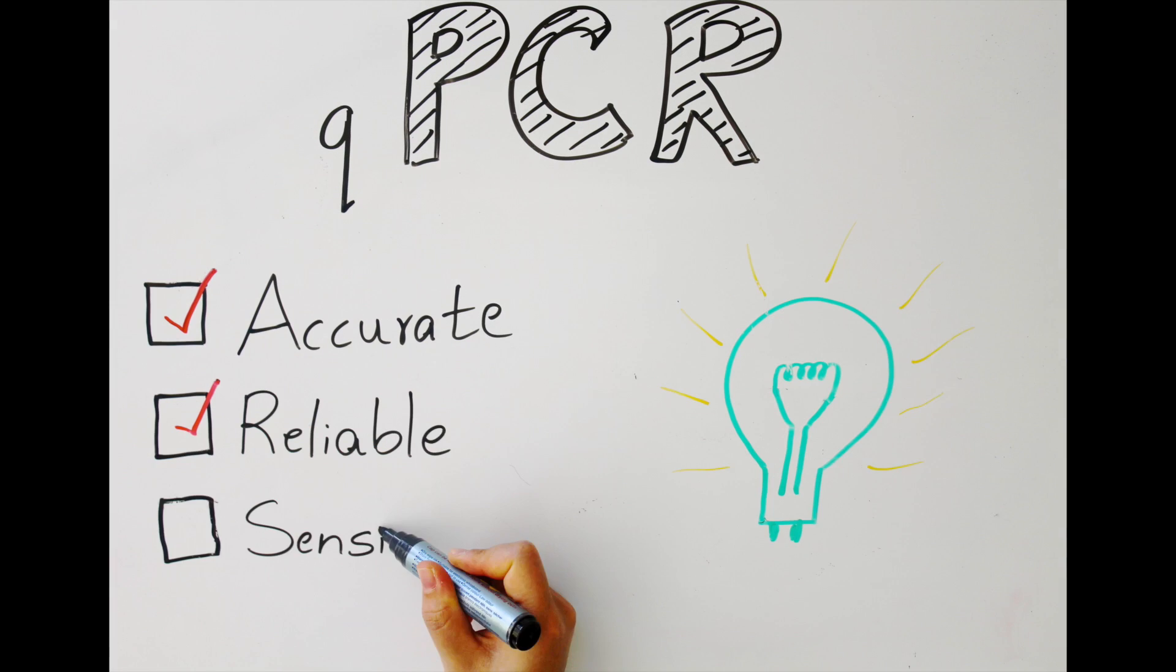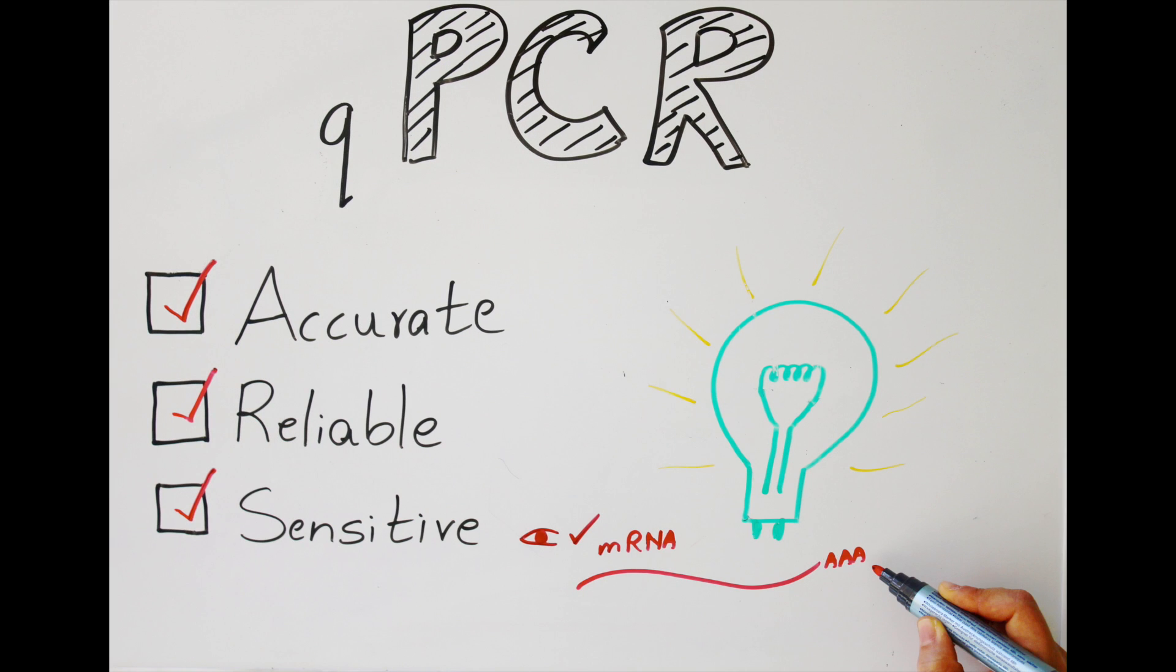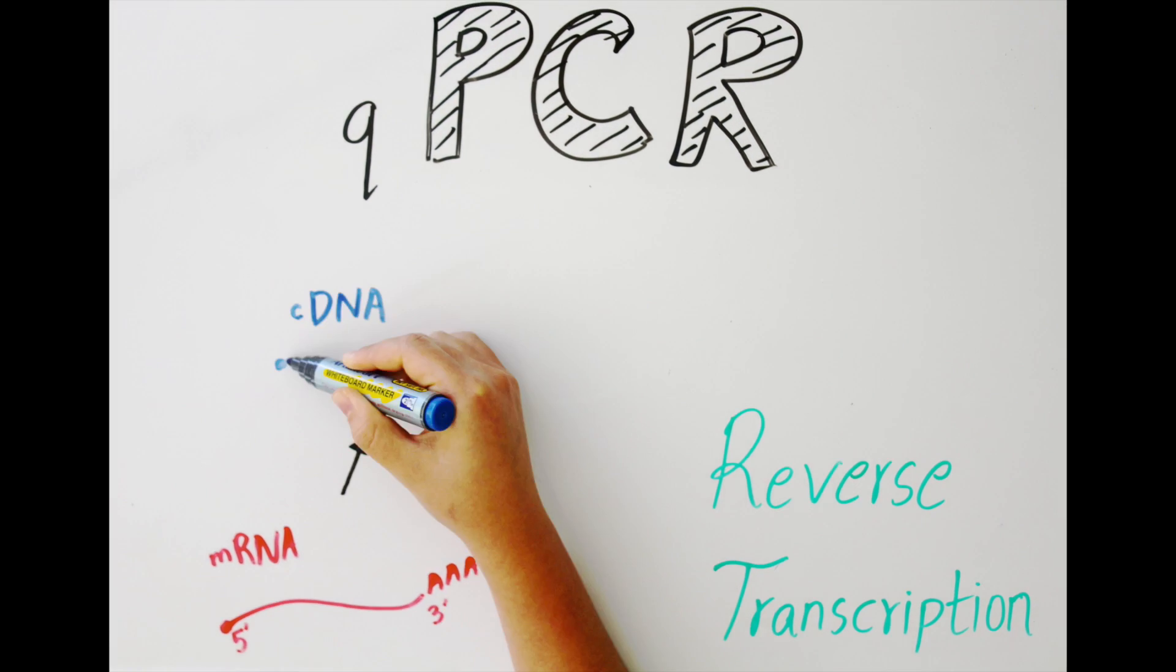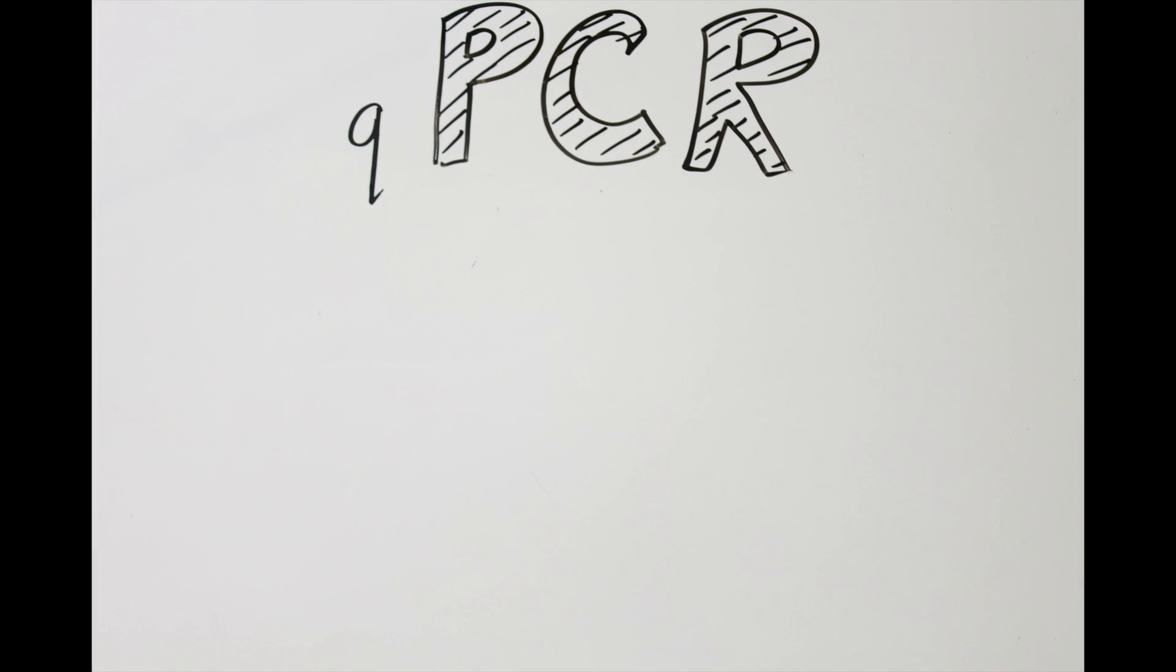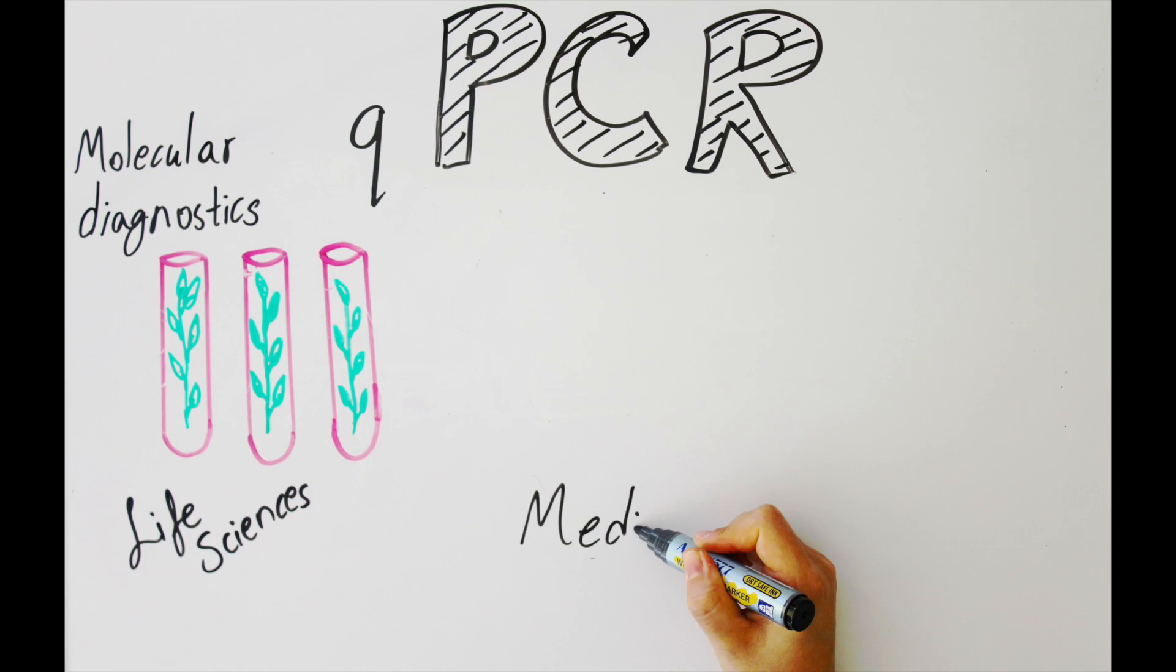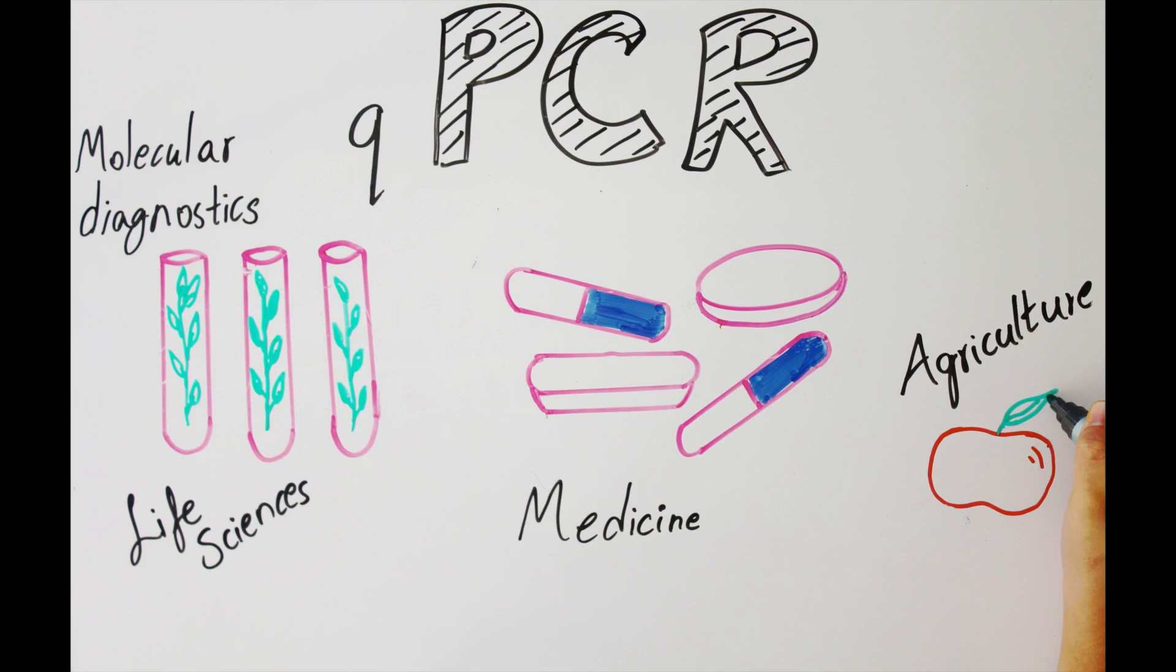qPCR is accurate, reliable, and extremely sensitive. It can even detect a single copy of a specific transcript. qPCR is commonly coupled to reverse transcription to measure gene expression. No wonder it is so important for molecular diagnostics, life sciences, agriculture, and medicine.